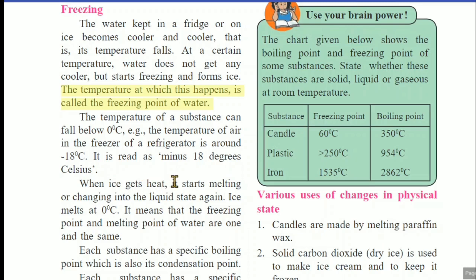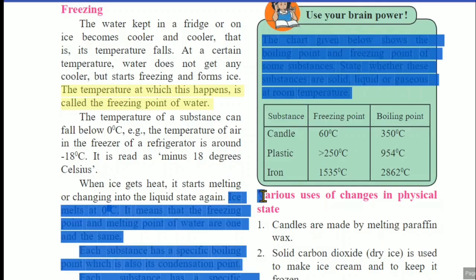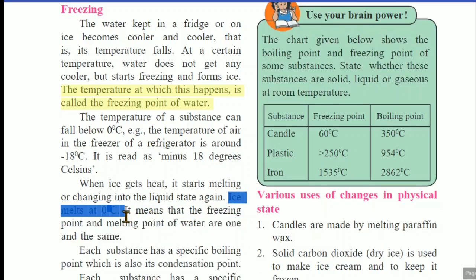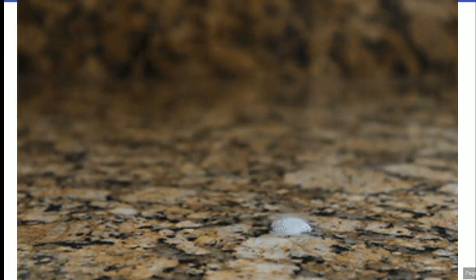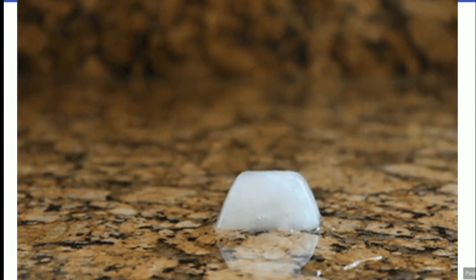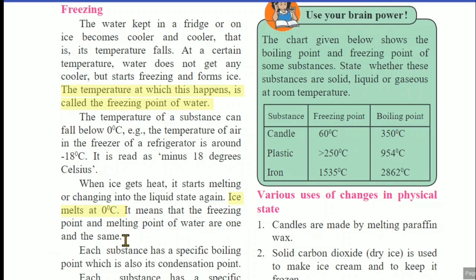When ice gets heated, it starts melting or changing into the liquid state. Ice melts at 0 degrees Celsius — please underline this. Very important: ice melts at 0 degrees Celsius. Whenever you observe that ice is melting, that means its temperature is 0 degrees Celsius. It means that the freezing point and melting point of water are one and the same — 0 degrees Celsius.